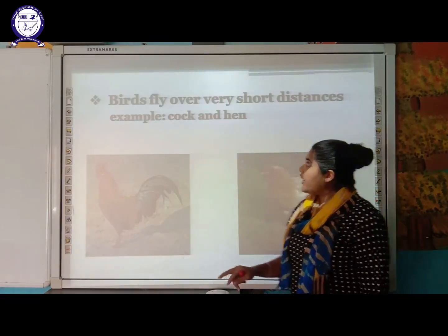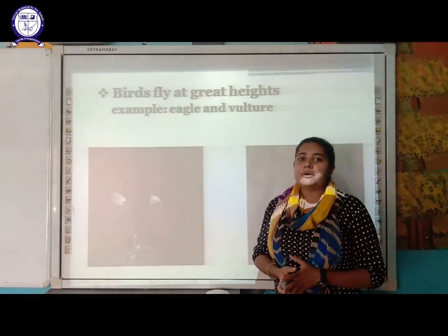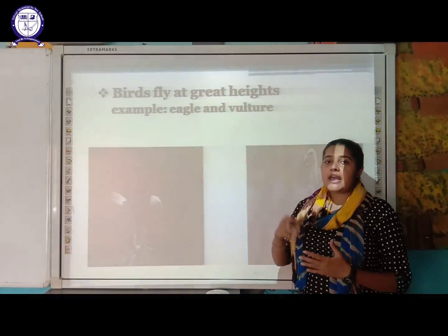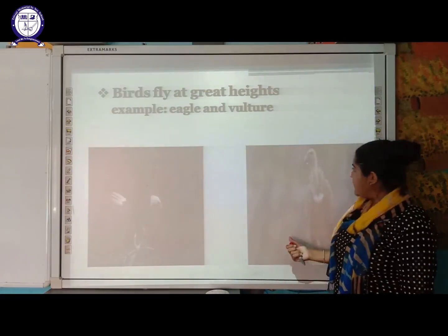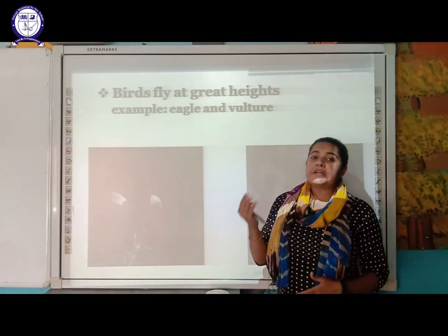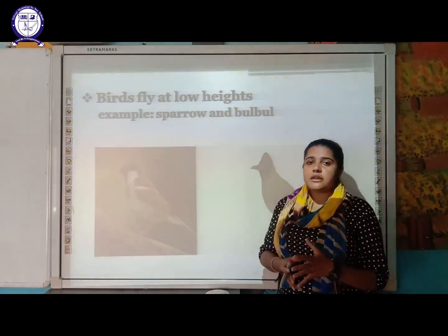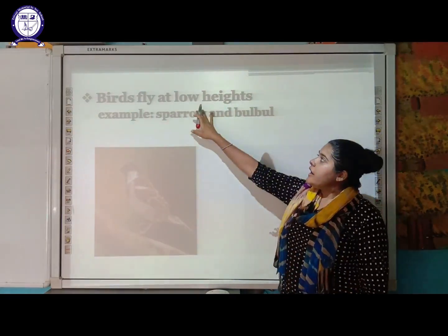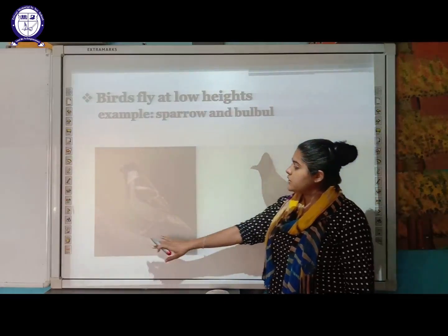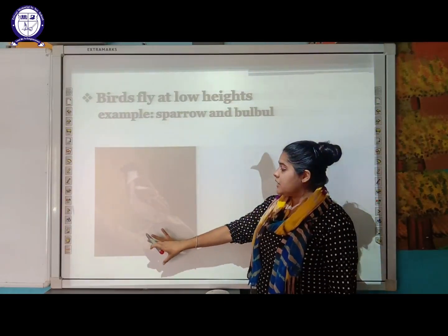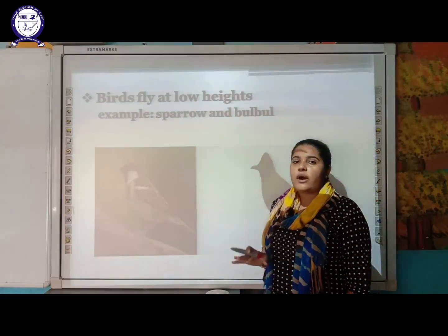Some birds fly at a greater height, high up in the sky — examples are eagle and vulture. Then there are birds that fly at a lower height, near the ground surface — examples are sparrow and bulbul, which you might have seen in your surroundings.